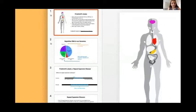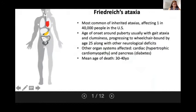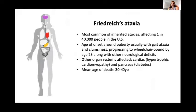Okay, so I am going to take over now and talk about a disease that is caused by triplexes. So, Friedreich's ataxia is a disease caused by triplexes. It's the most common of inherited ataxias affecting one in 40,000 people in the U.S. The age of onset of this disease is around puberty, usually with gait ataxia and clumsiness. And this progresses to the patients being wheelchair bound by age 25, along with a variety of other neurological deficits. Other organ systems that are affected include the heart, leading to hypertrophic cardiomyopathy, which is the most common cause of death, as well as the pancreas causing diabetes. And the mean age of death is between 30 and 40 years old. So this is a really serious illness.